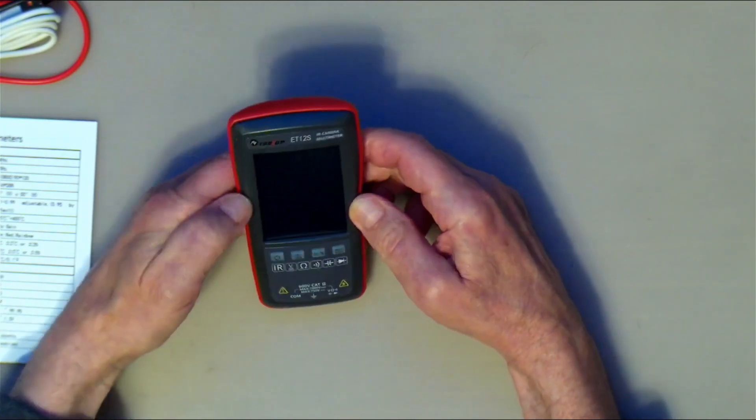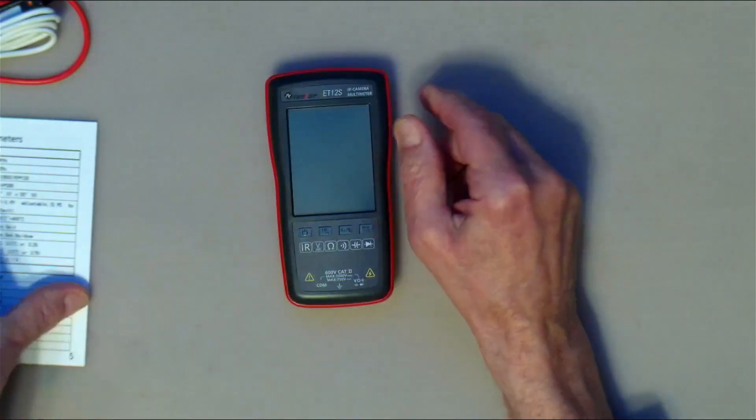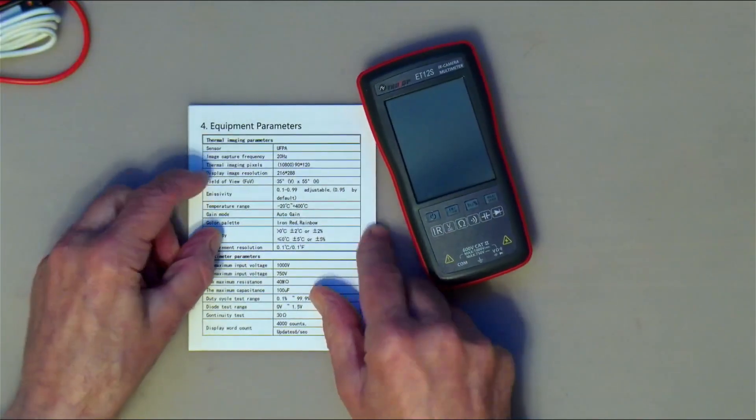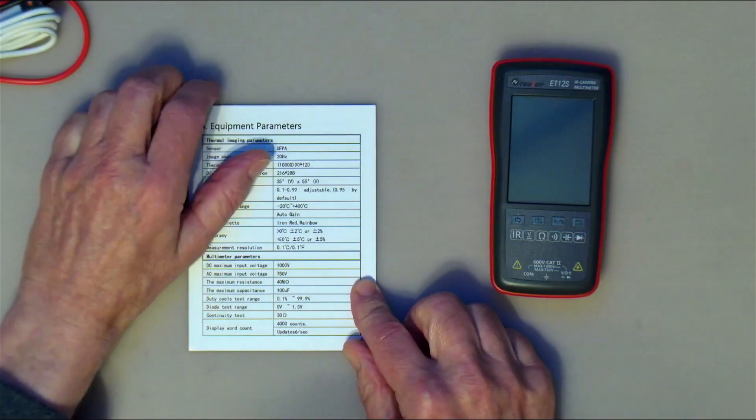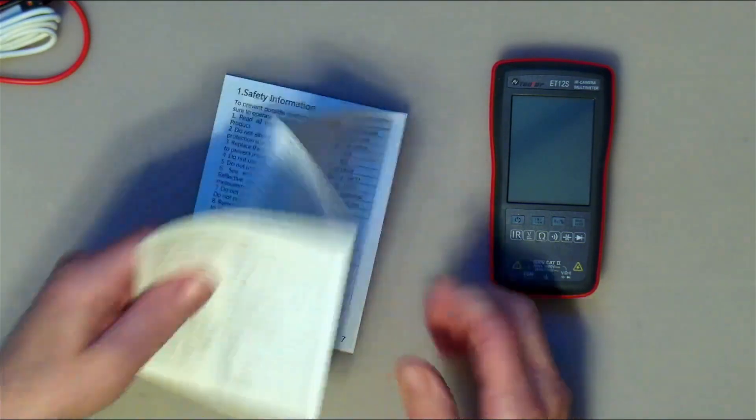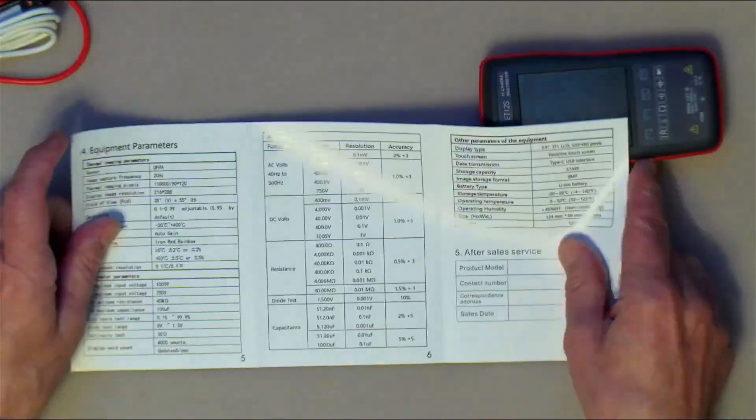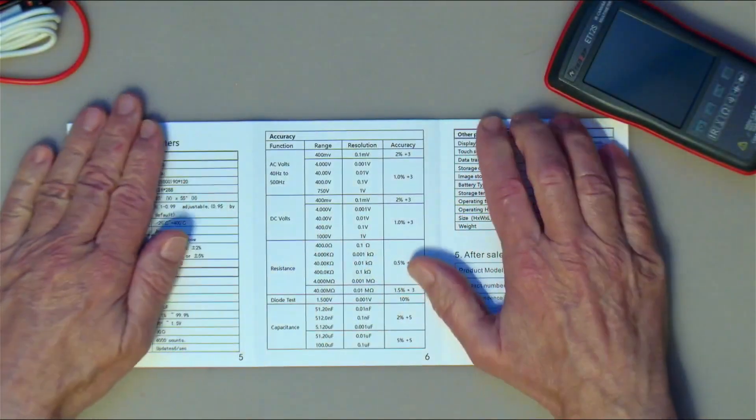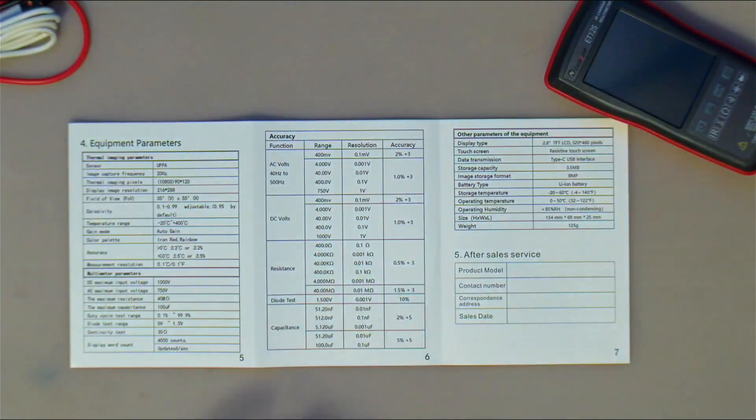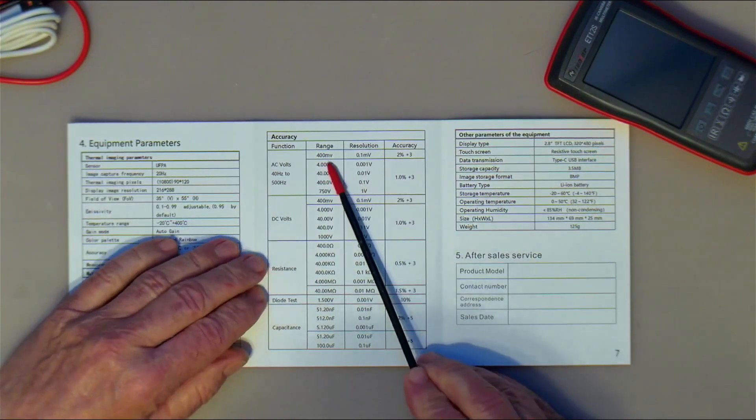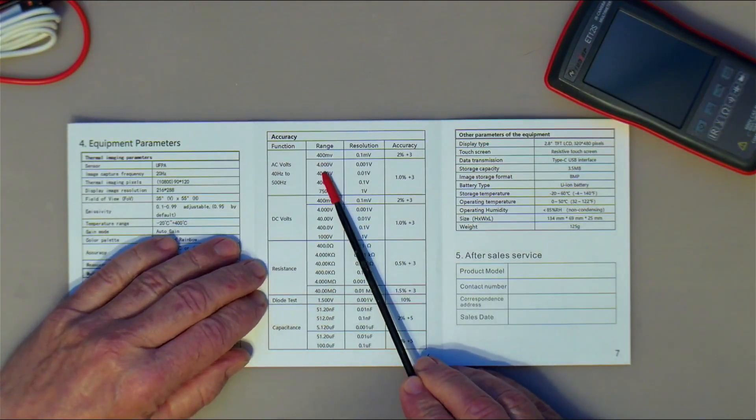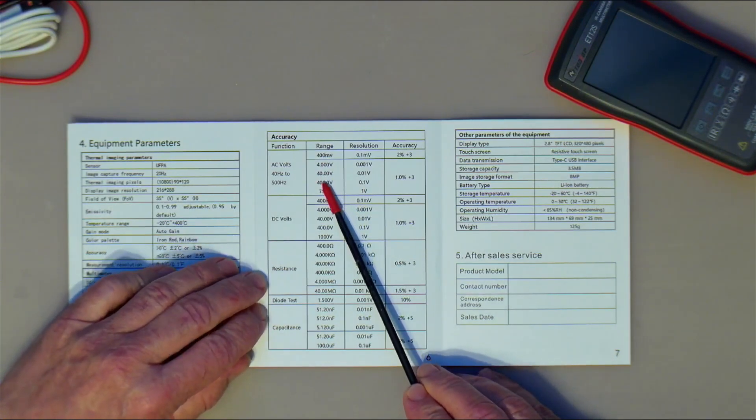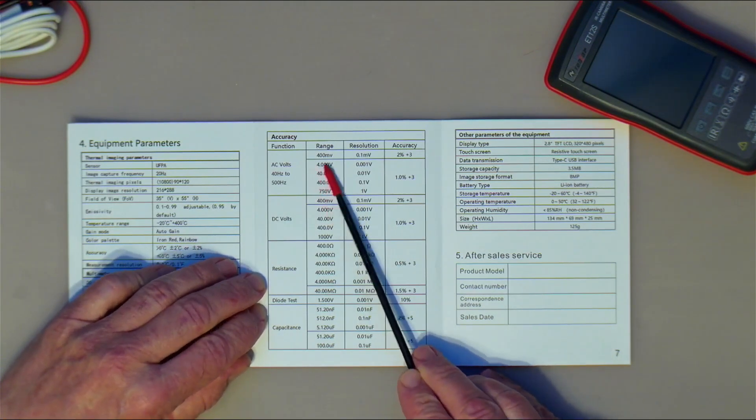Now the multimeter itself, if you look at the information over here, somewhere it says that it's a 6000 count multimeter on the page that's selling it, but it's not. It's 4000 count.